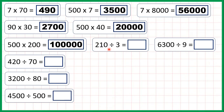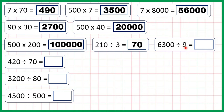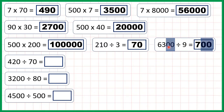Now we have division. 210 divided by 3 is 70, because 21 divided by 3 is 7, but if we have an end zero in the dividend, we need an end zero in our quotient. 6,300 divided by 9 is 700, because 7 times 9 is 63, but if we have two end zeros in our dividend, we need two end zeros in our quotient.